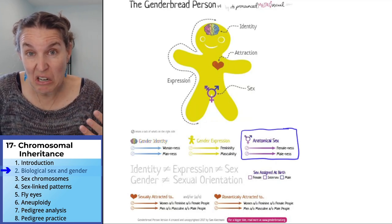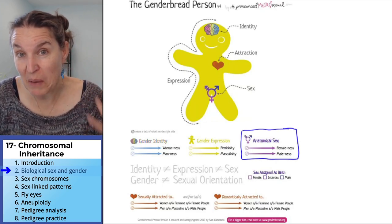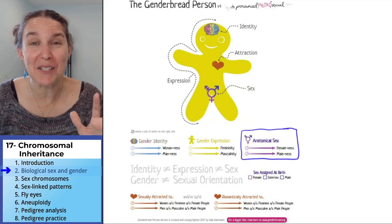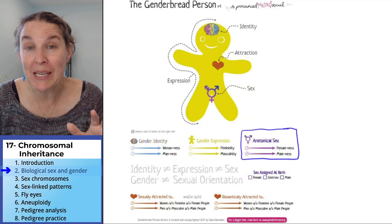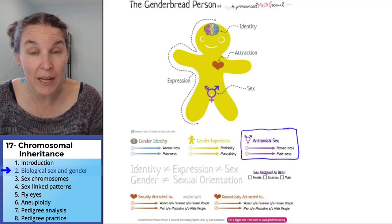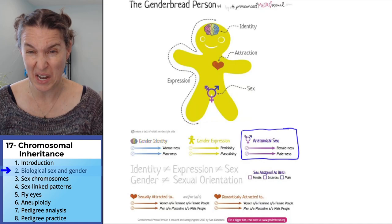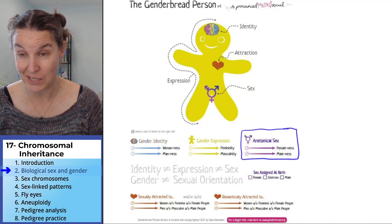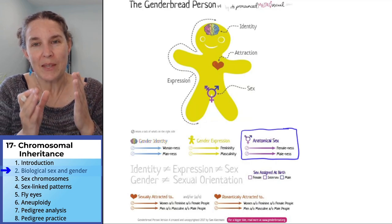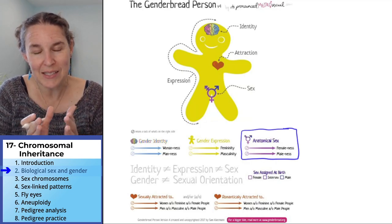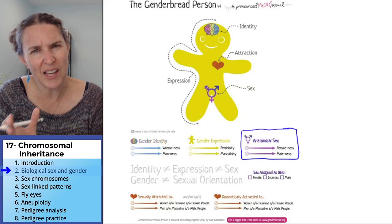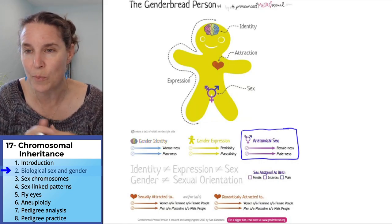Everything is on a spectrum. So anybody who tells you that anatomy is binary, or humans are binary, or critters and all the rest of the critters are binary — it's just not true. Anatomical sex, just like everything else, exists on a spectrum. And it's super interesting.